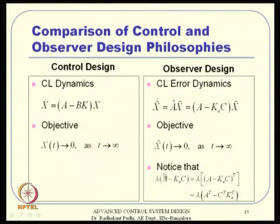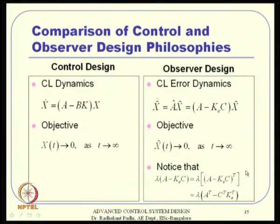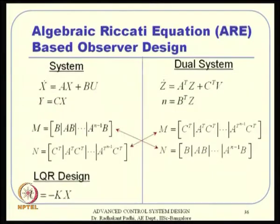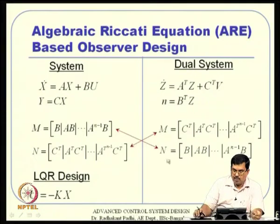The only difference was that K_e appears on the left-hand side for the observer, whereas it appears on the right-hand side for the controller. We took the transpose of this matrix so that K_e-transpose appears on the right, and then we can treat A-transpose and C-transpose as equivalent to A and B, designing K_e-transpose instead of K_e directly. We also observed the duality: controllability for one system is observability for the other and vice versa.